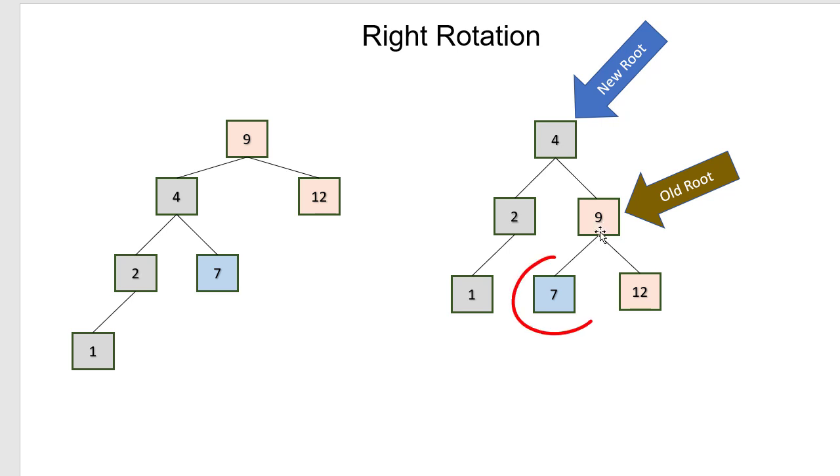Well, everything that's in the right subtree of nine has to be greater than four to be in four's right subtree and less than nine so that it's in nine's left subtree. So once we've done with the rotation, we have a nice balanced tree.